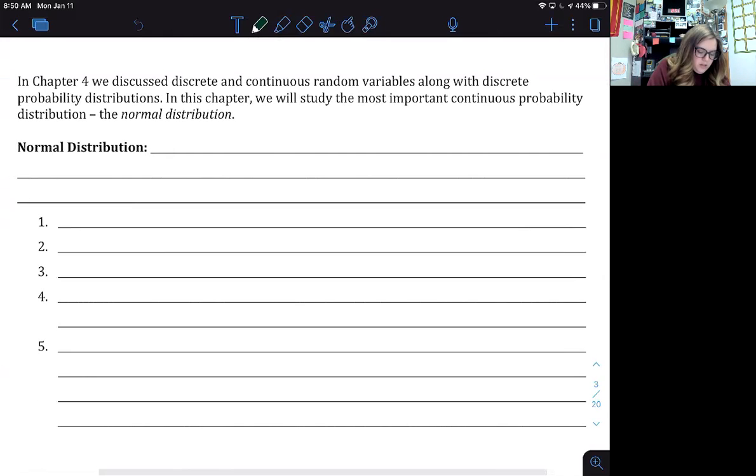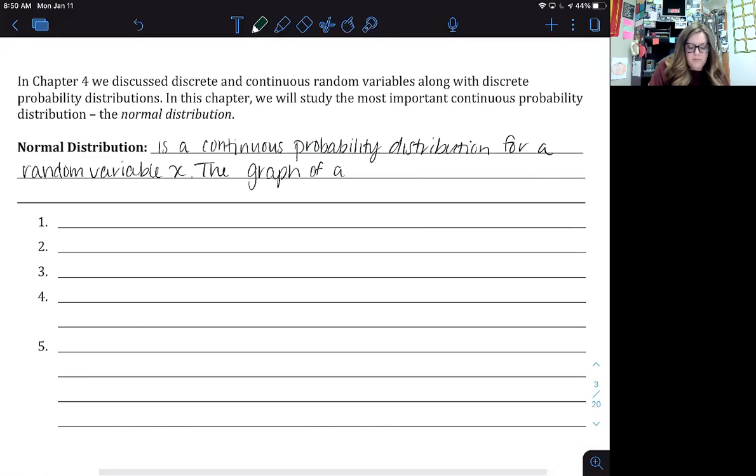So the normal distribution is a continuous probability distribution for a random variable x. The graph of a normal distribution is called the normal curve.